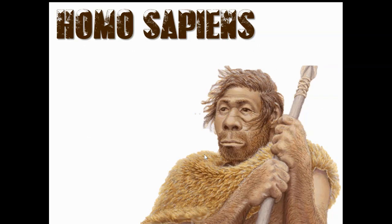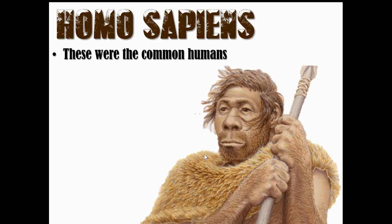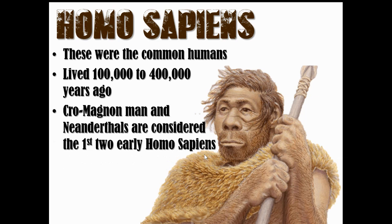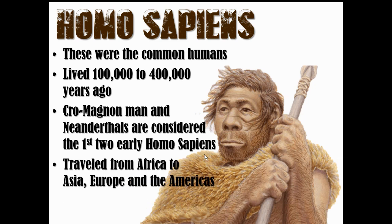Next we have Homo sapiens — these are your common humans, like what you see in TV shows. They lived from about 100,000 to 400,000 years ago. The Cro-Magnon man and Neanderthals are considered the first two early Homo sapiens — the first that actually look like an average everyday human. They traveled from Africa to Asia, Europe, and the Americas. They were known as the 'wise men,' though that's with some irony.